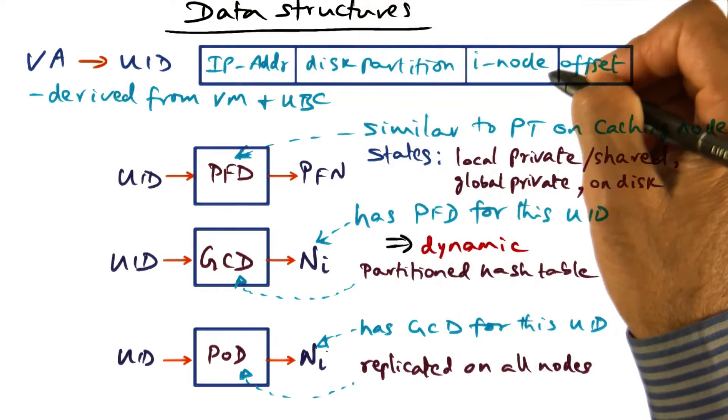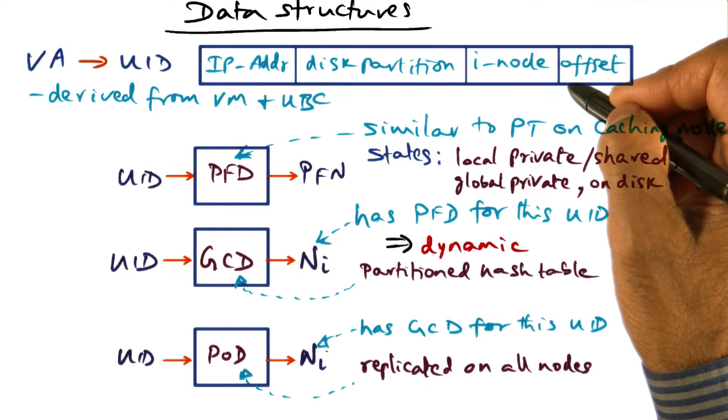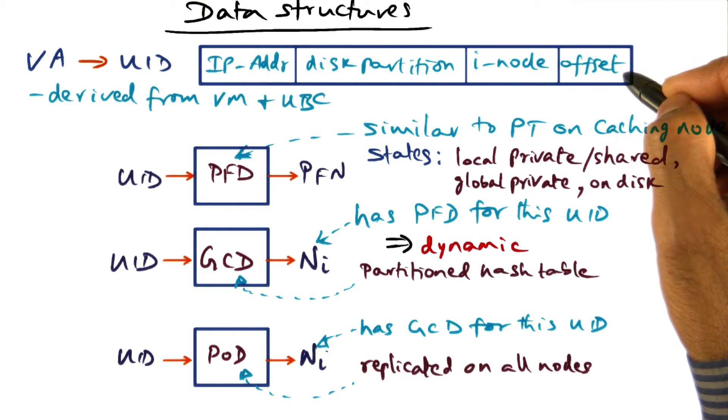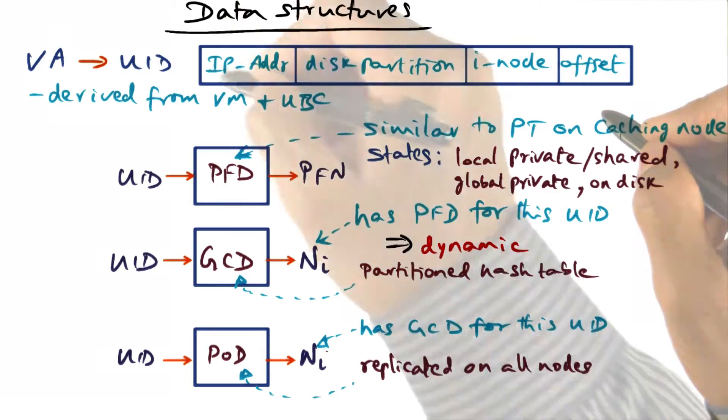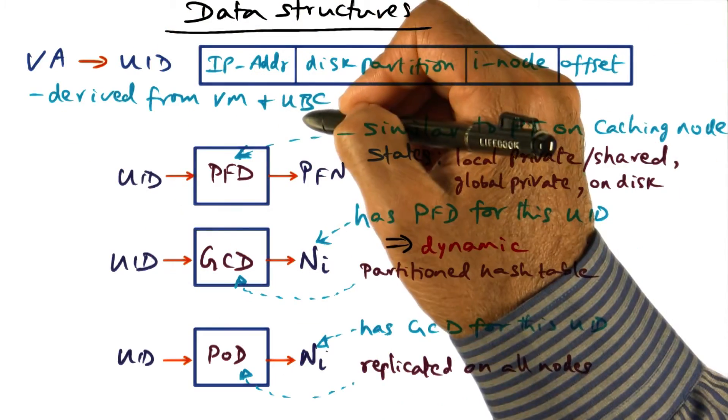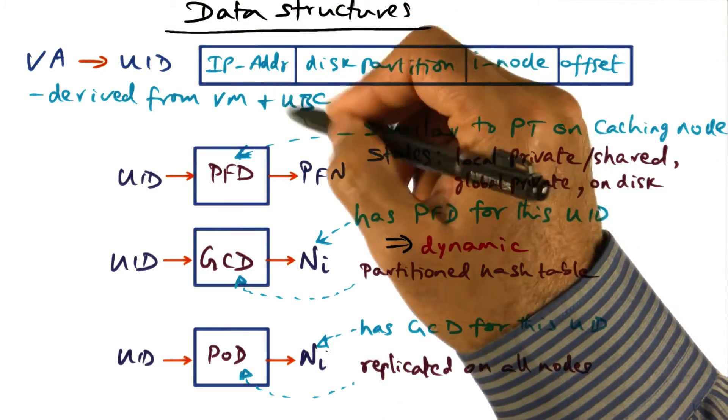So given a virtual address, the first three parts uniquely identify the page, and the fourth part identifies the offset within that page for that virtual address. And this, we can derive it from the virtual memory system as well as the UBC.